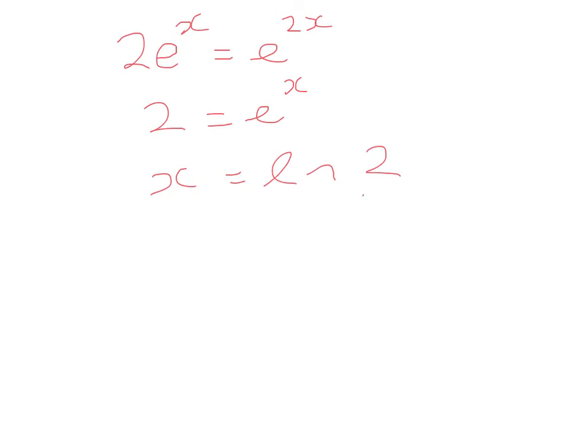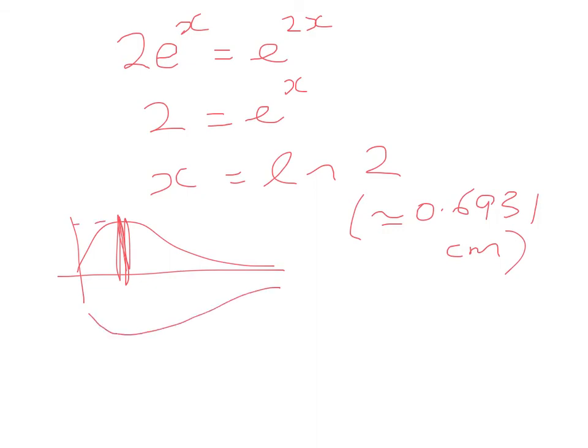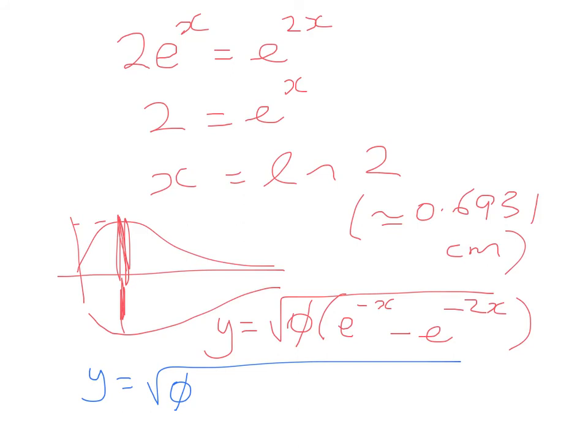So now we've found the x-coordinate, which is around about 0.6931 centimetres. But we're not done because we are asked how wide it should be. Remember that this is the function, but the actual width is going to be twice of that. We're working in two dimensions, but the width is, you can think of the width as going right through the middle of the drop. So we need to figure out the y-value. We're evaluating y equals square root of phi times e to the negative x minus e to the negative 2x.